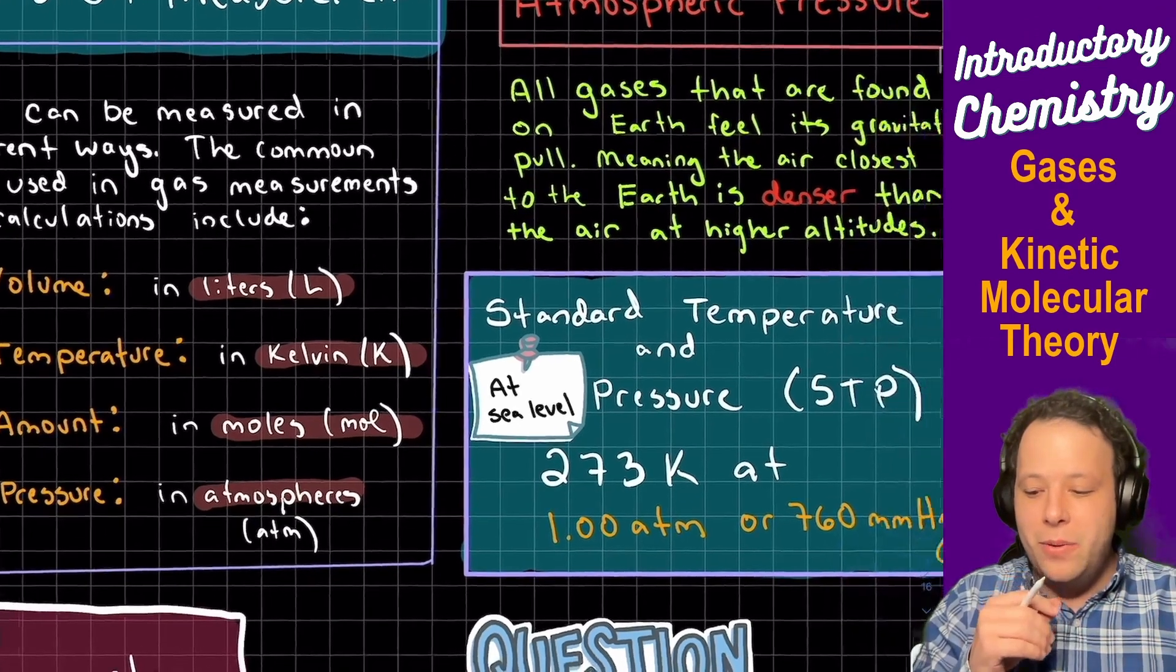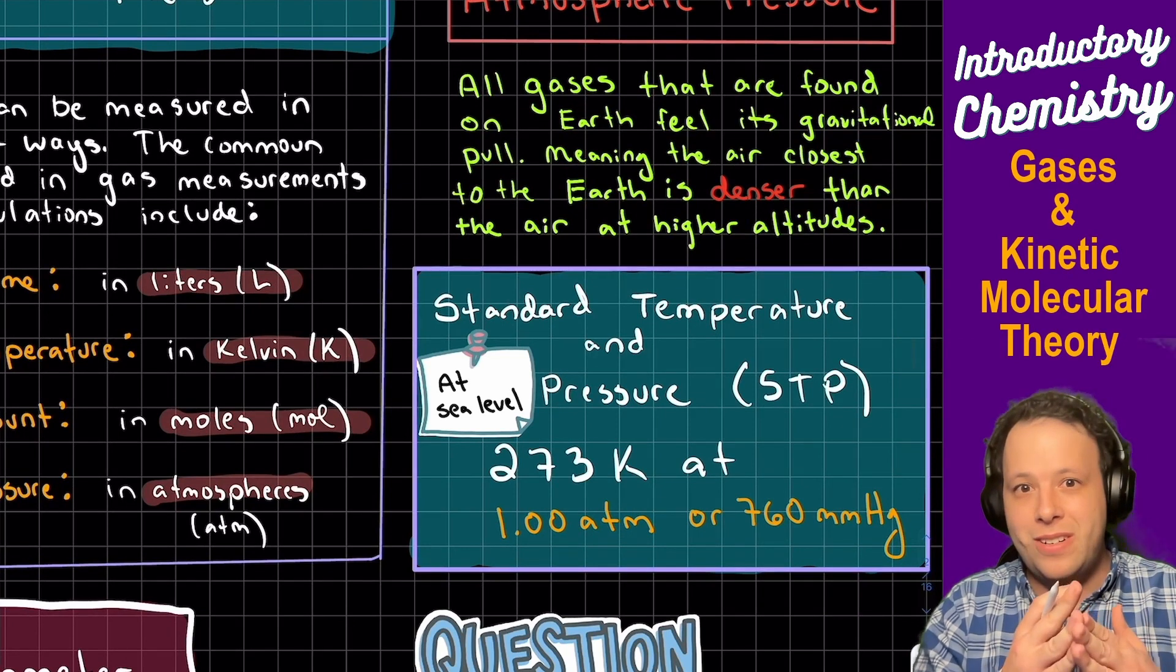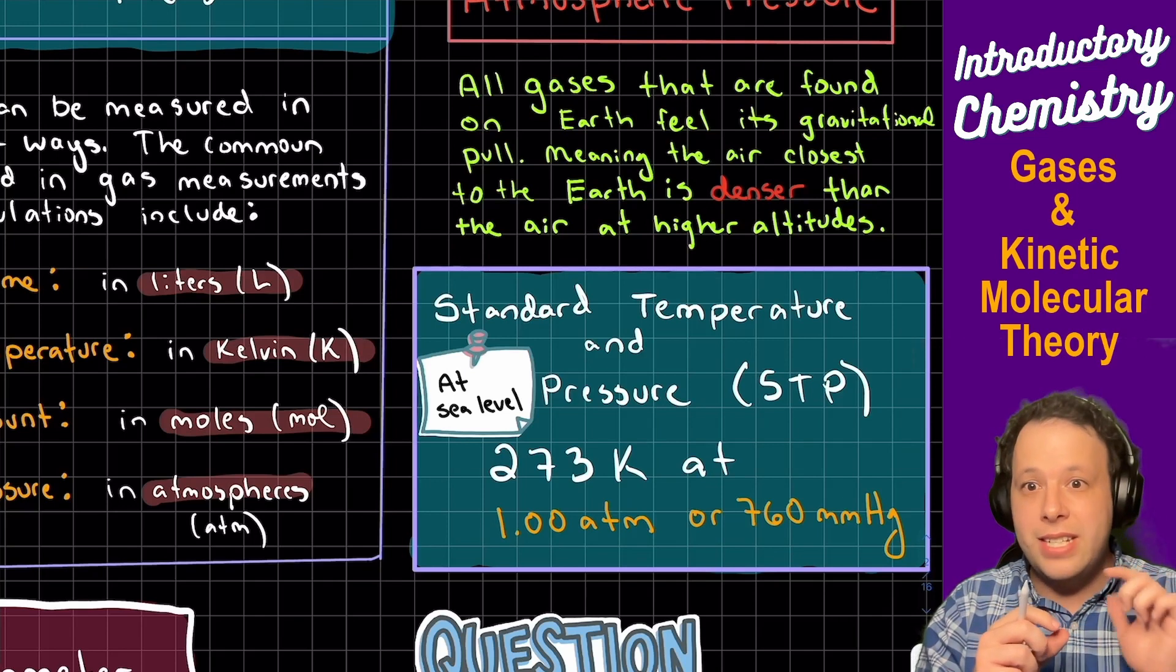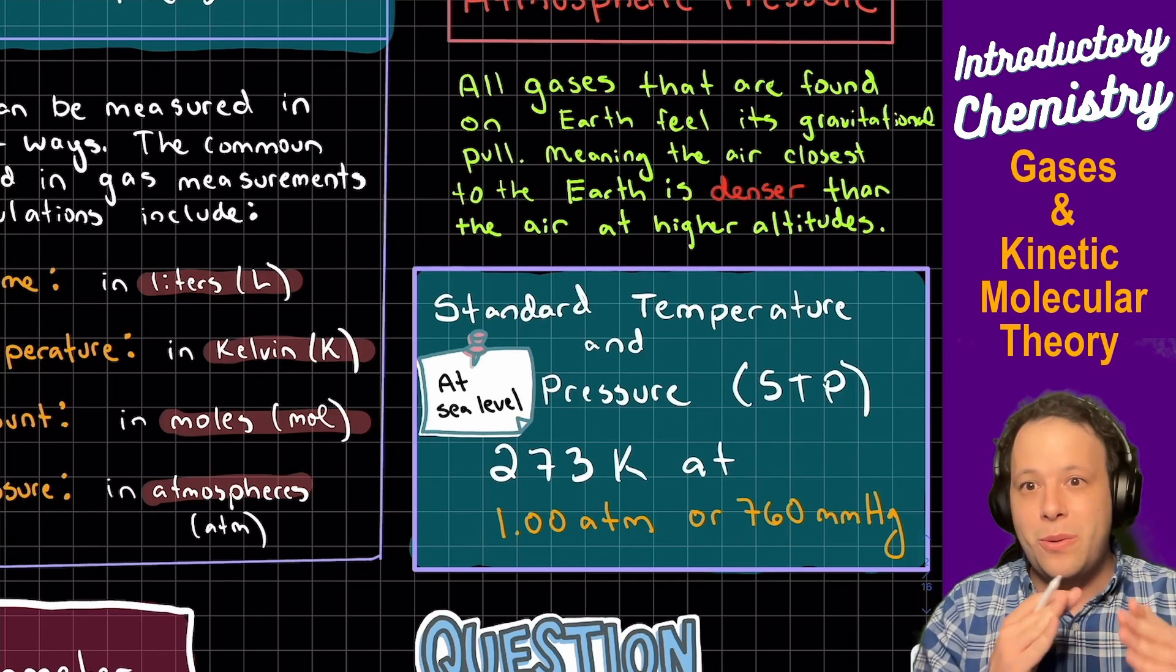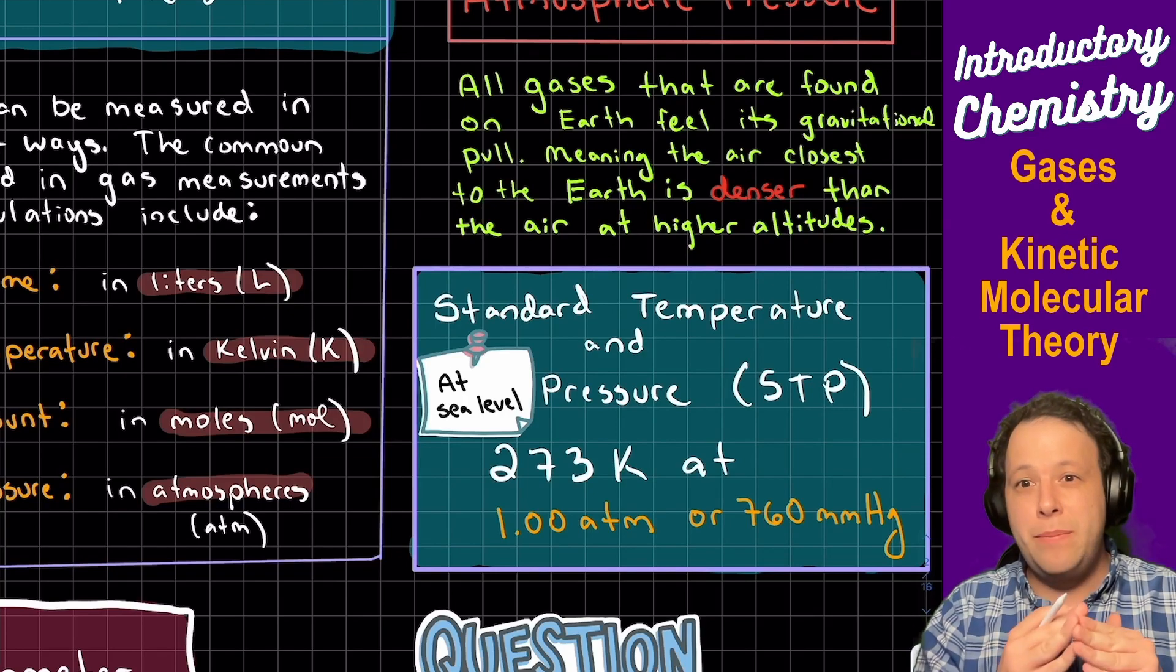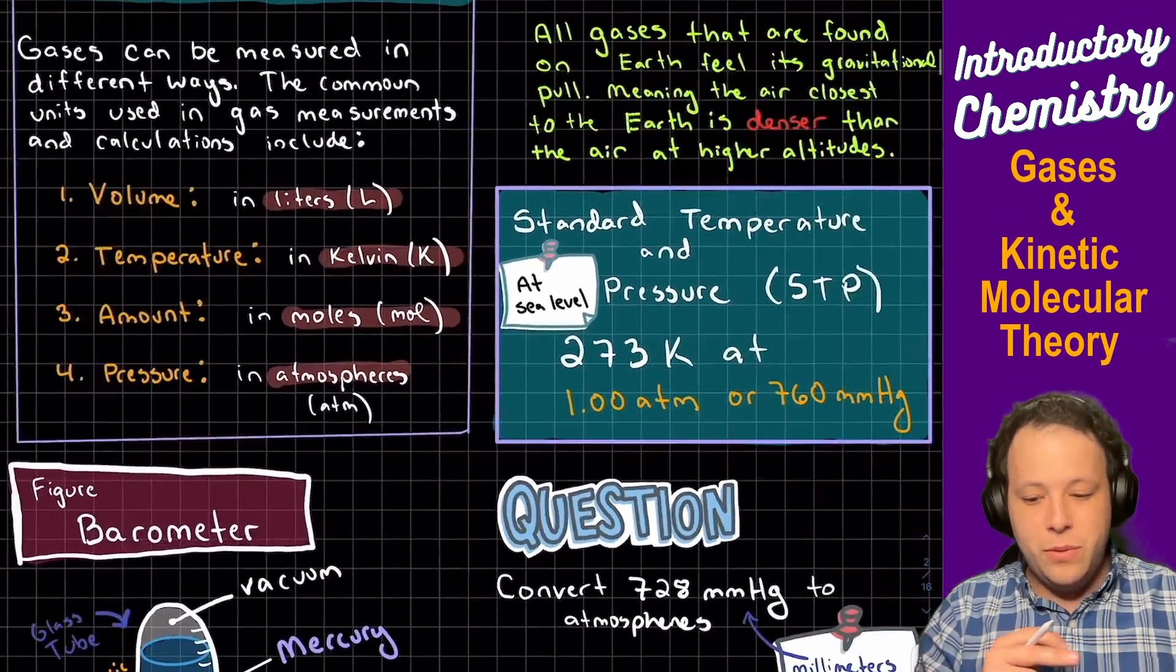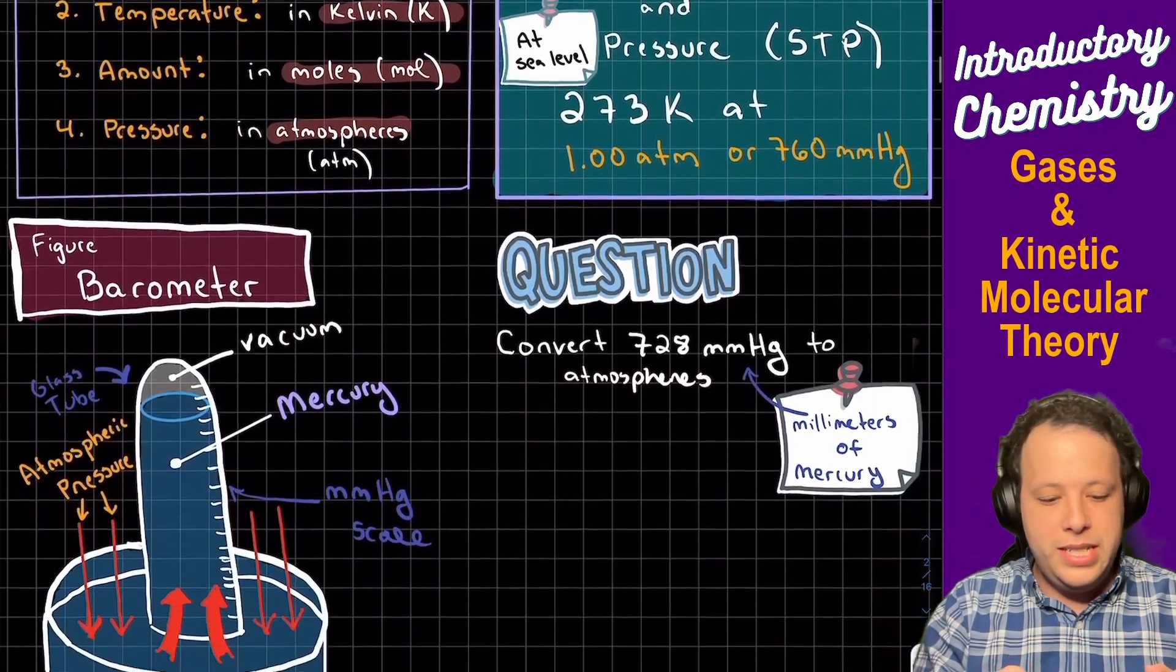Now when it comes to standardized pressure and temperature - so STP - this is always referring to 273 Kelvin, so if you think of the Celsius conversion term, and at one atmosphere or 760 millimeters of mercury. So why is that important? Well, what does that mean? What is pressure?